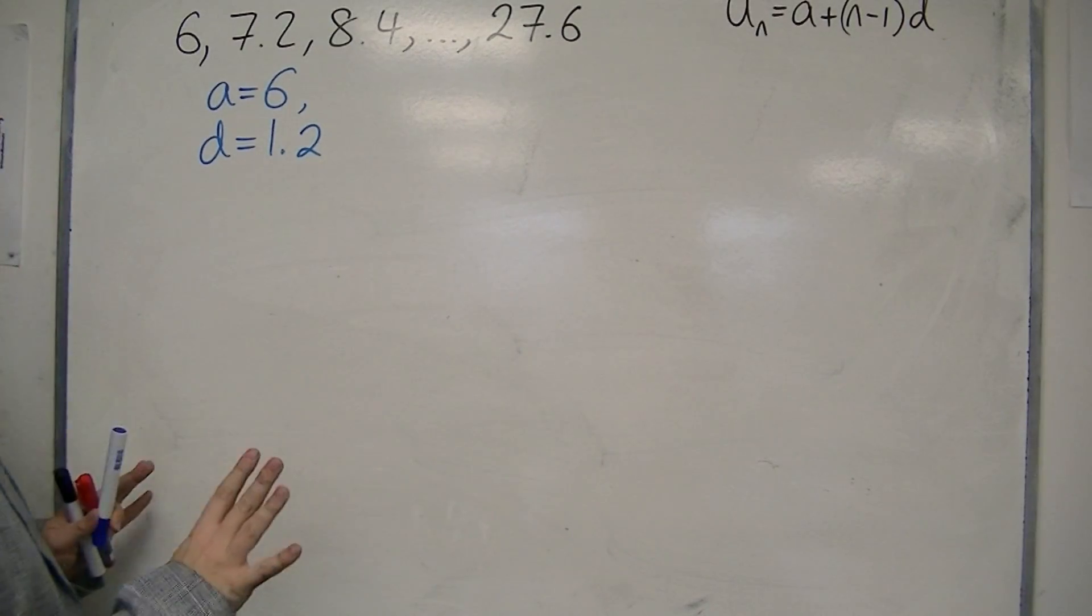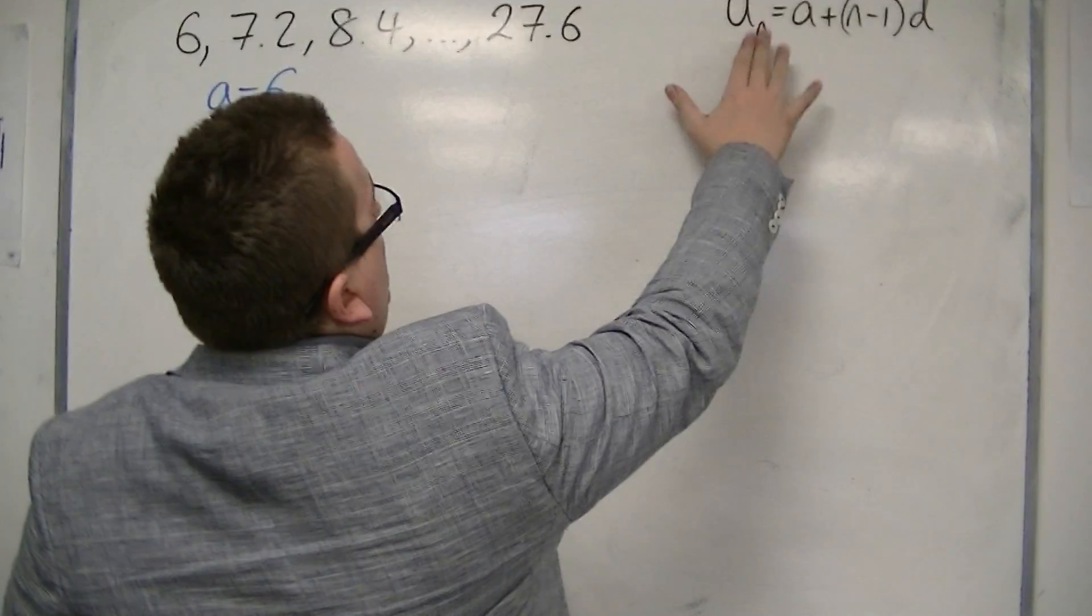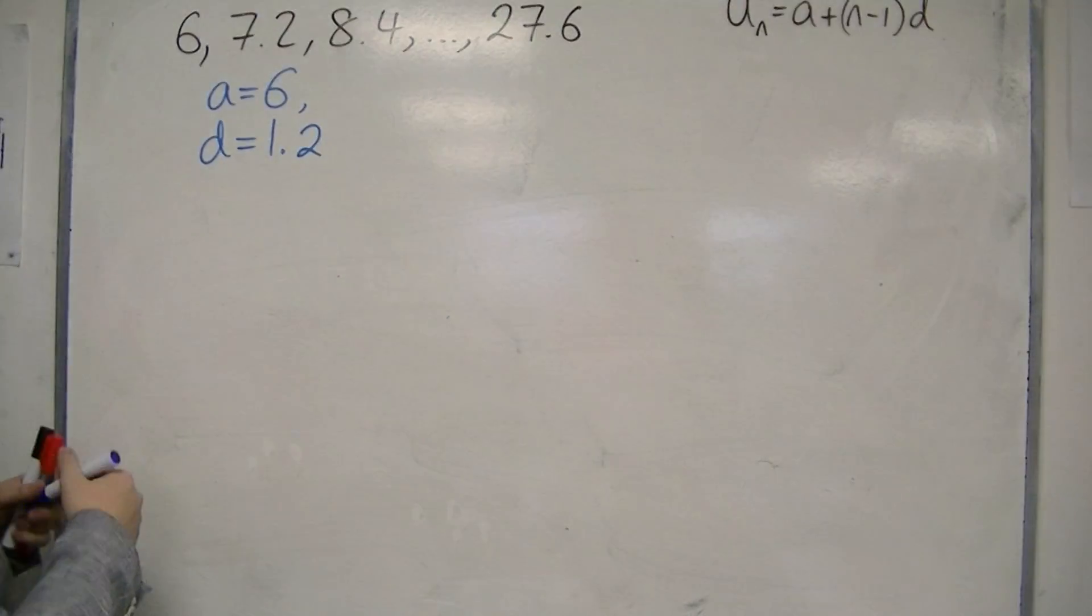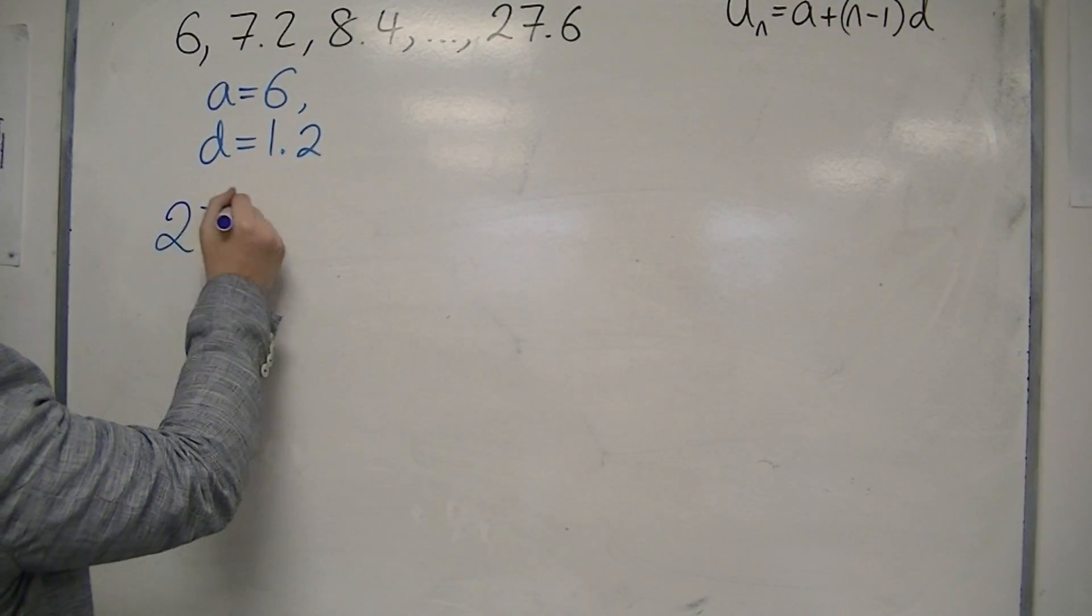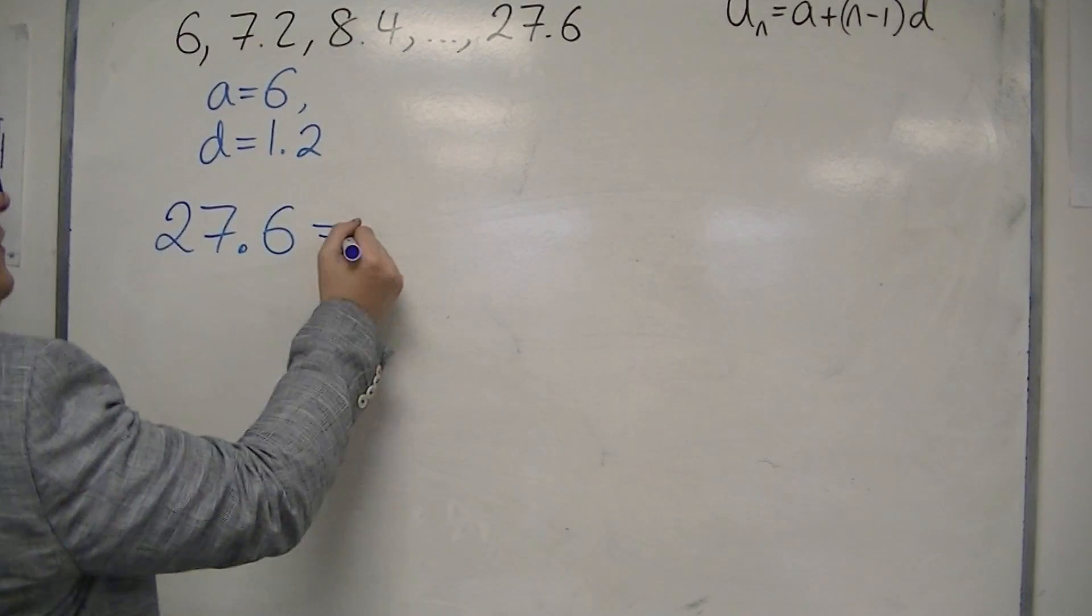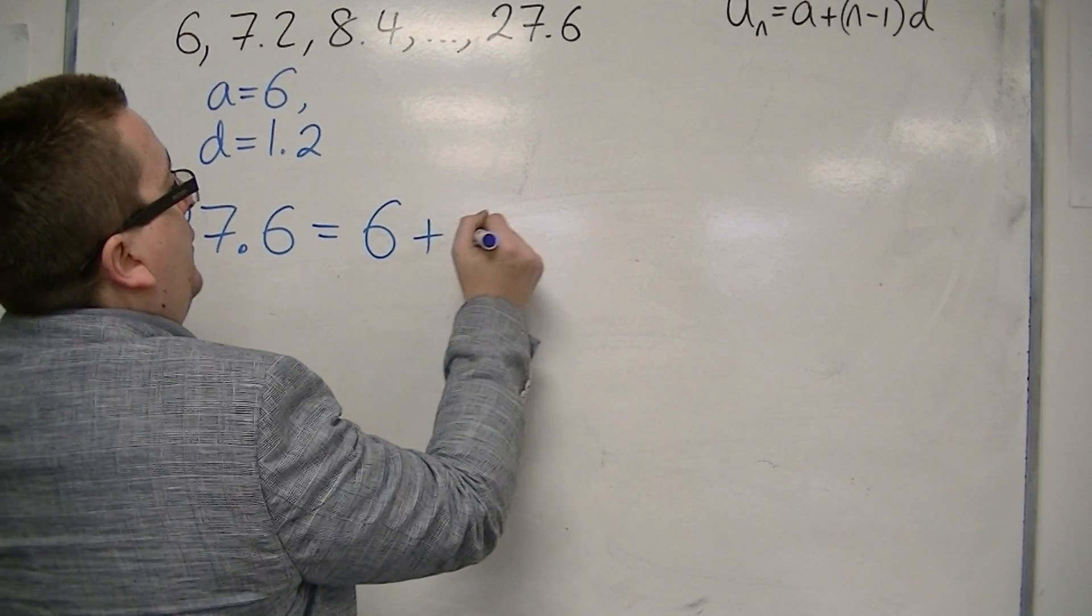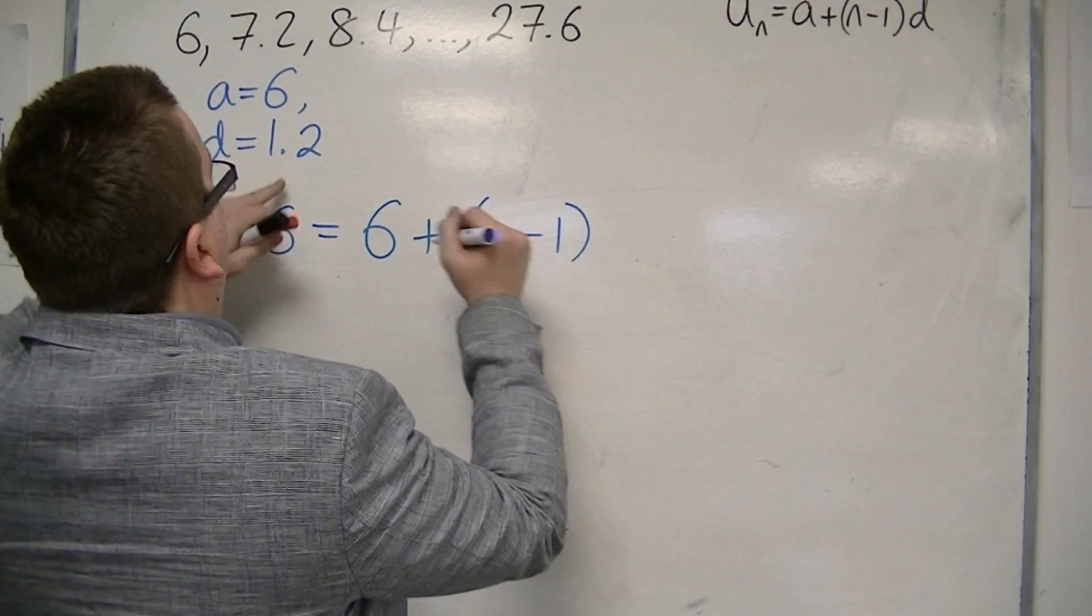What I'm saying is that the nth term is that, so the last term can also be written in that same way. 27.6 can be written as a plus (n-1) times d.